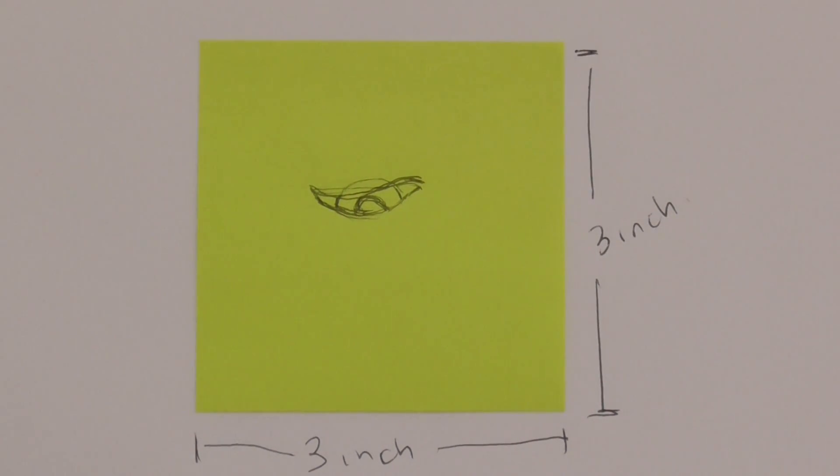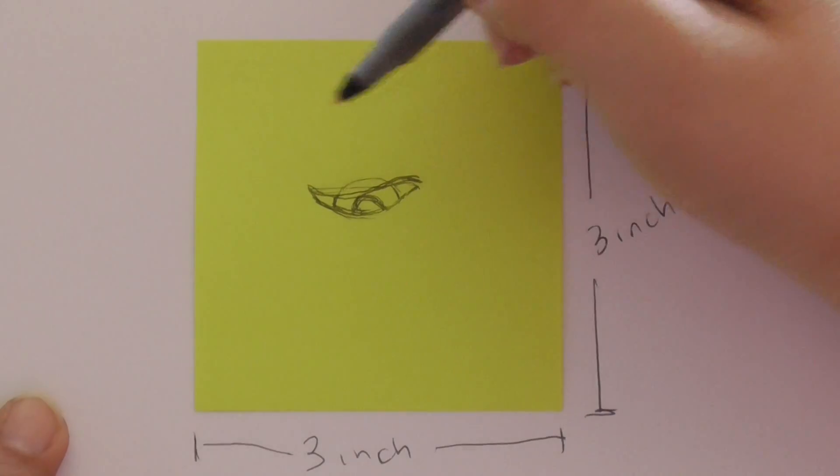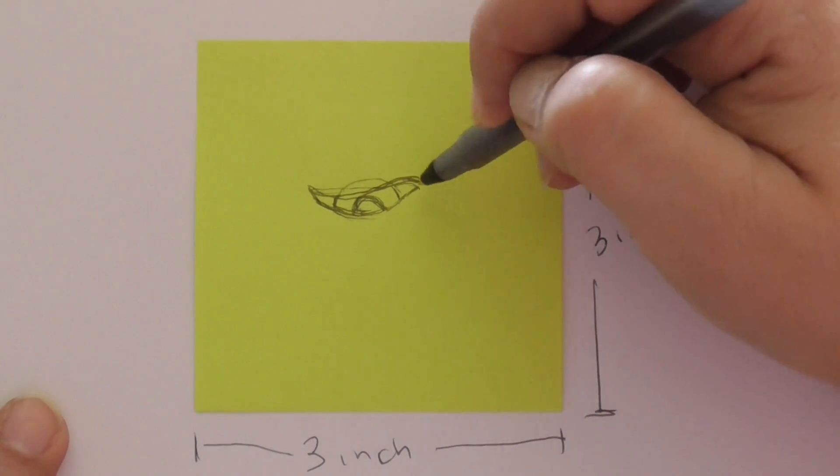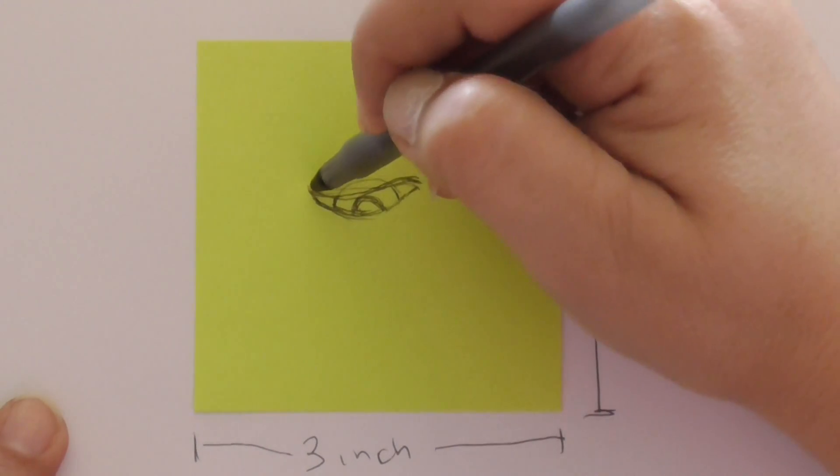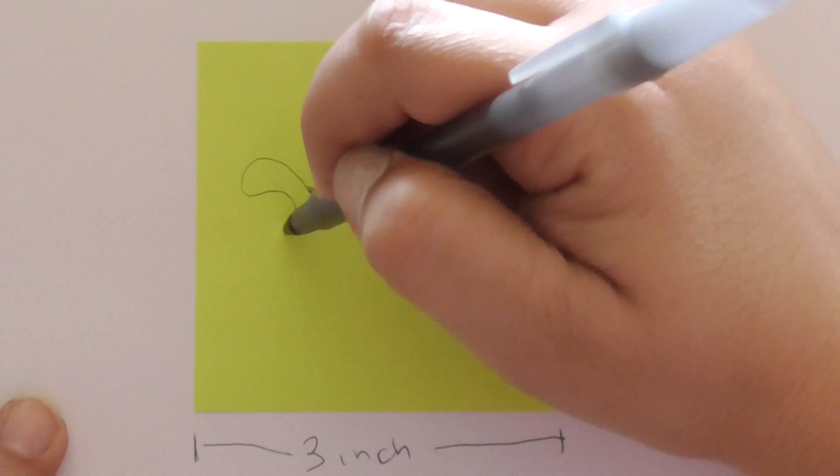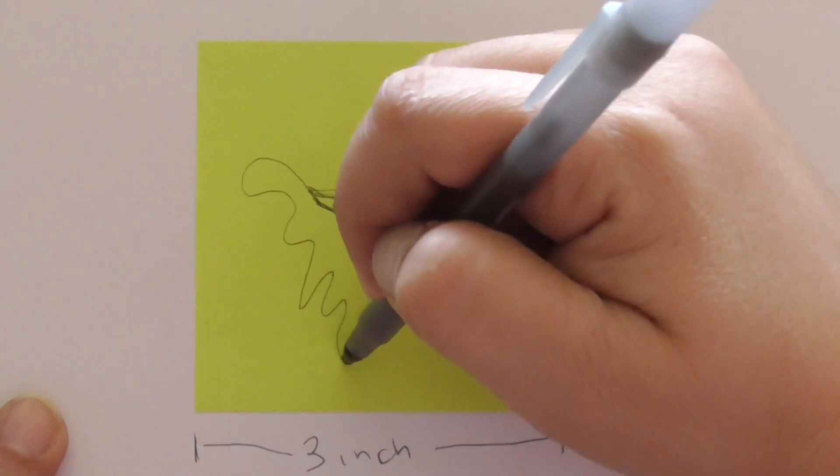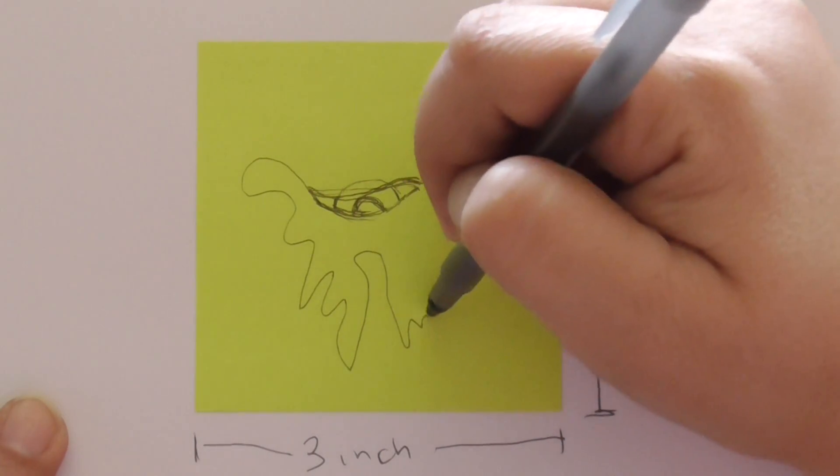You're gonna start with drawing an eye and then I want you to take your pen for a walk. Start from anywhere, I'm gonna start from this outside edge and just let it go wherever. Don't think about it, just let your pen go for a walk.